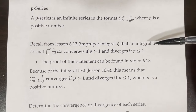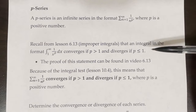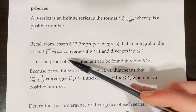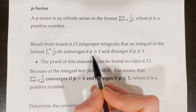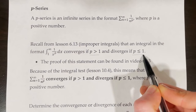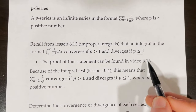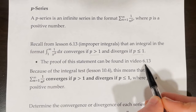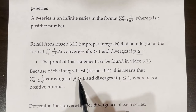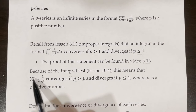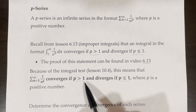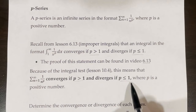Recall from lesson 6.13 on improper integrals that an integral in the format: integral from 1 to infinity of 1 over x to the p dx will converge if p is greater than 1, and will diverge if p is less than or equal to 1. Because of the integral test, which we covered in the last lesson, this means that the series from n equals 1 to infinity of 1 over n to the power of p will converge if p is greater than 1, and diverges if p is less than or equal to 1.